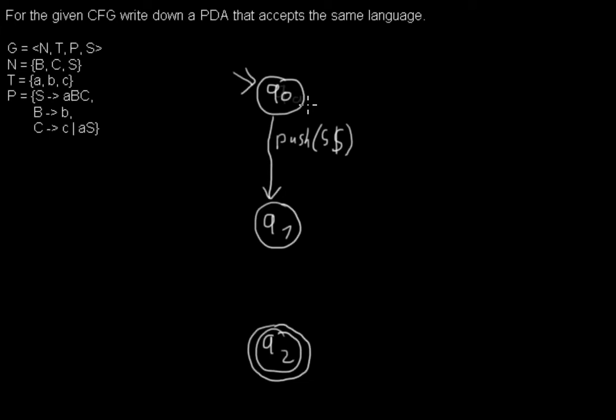And we start with an empty stack so we have to push it first, and then there's another transition from q1 to q2 where we pop those stack bottom symbol. Now for every terminal symbol there's a new state.